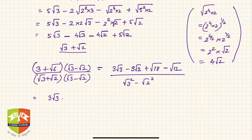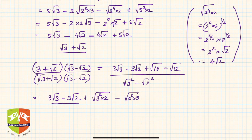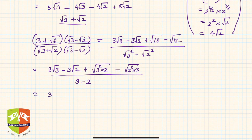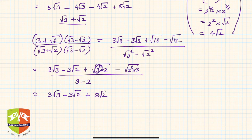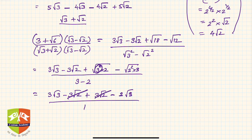The denominator becomes 3 - 2 = 1. Now √18 = √(3² × 2) = 3√2, and √12 = √(2² × 3) = 2√3. So the numerator is 3√3 - 3√2 + 3√2 - 2√3. The terms -3√2 and +3√2 cancel, and 3√3 - 2√3 gives √3, divided by 1.